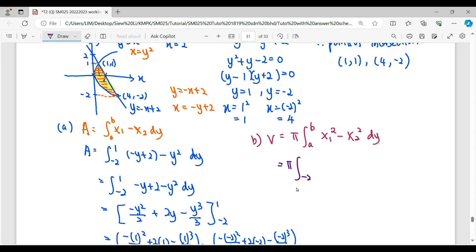So therefore, look at this region. Lower limit still -2. Upper limit still 1. And then the right-hand side function, linear. So (-y + 2)² minus. The right-hand side graph here will be y². Then square. Then dy.